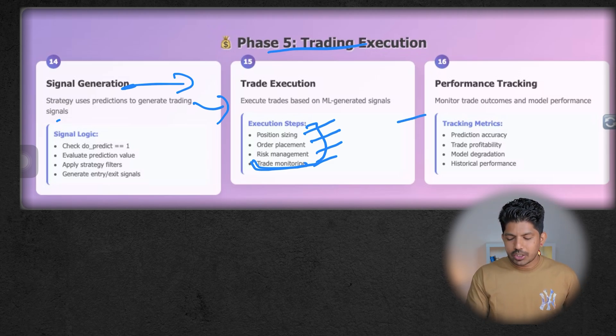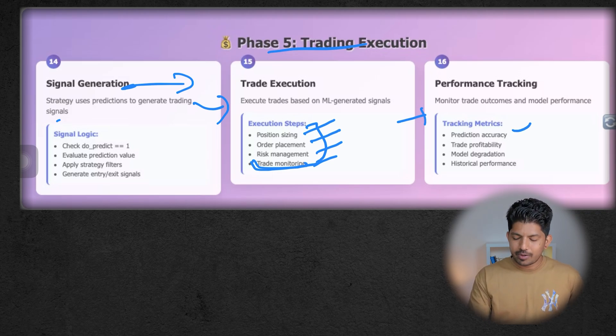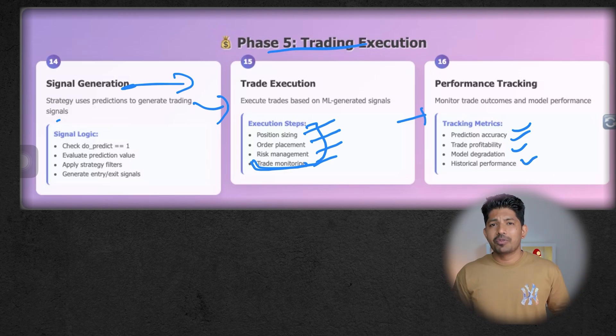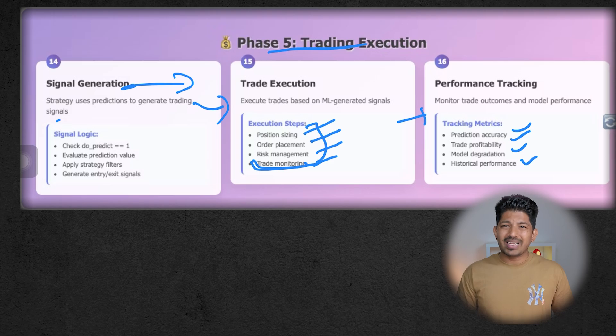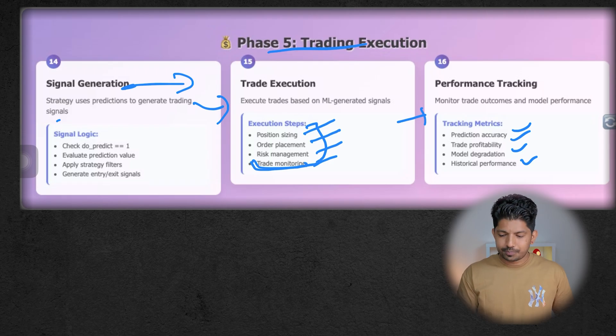The last but not the least is performance tracking. In this, we will monitor trade outcomes and model performance—the prediction accuracy, trade profitability, model degradation, and historical performance. Sometimes what happens is with time and with new data, the model's quality is degraded. So we have to always keep on upgrading the models with the new data.